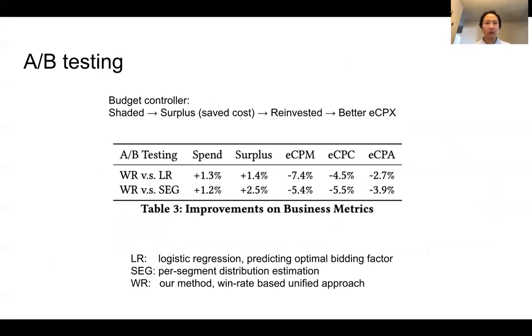Now, let's go back to the motivation of bid shading. Why do we do bid shading? Because we want to save money. So what do we do with the money we saved? We want to reinvest the money to buy more impressions, and therefore more clicks and actions, which eventually would improve the ECPA business metrics.